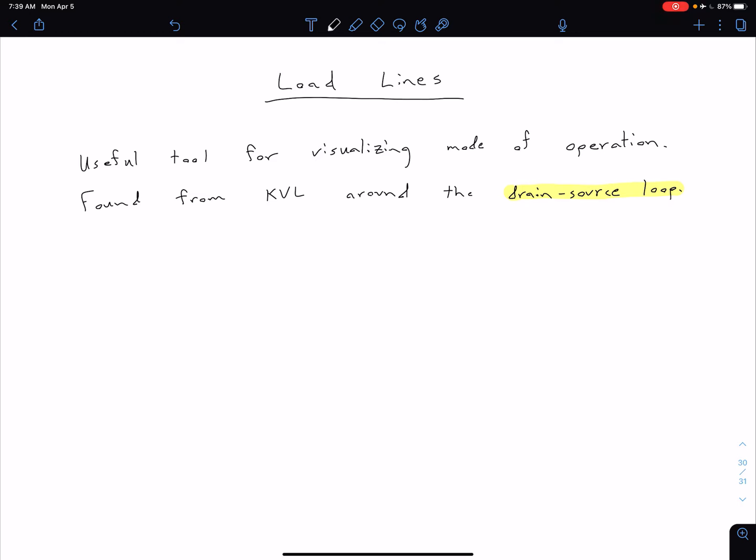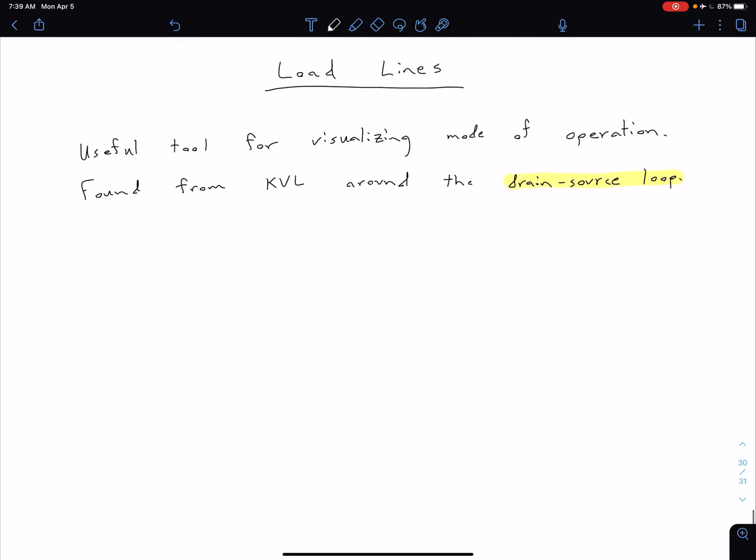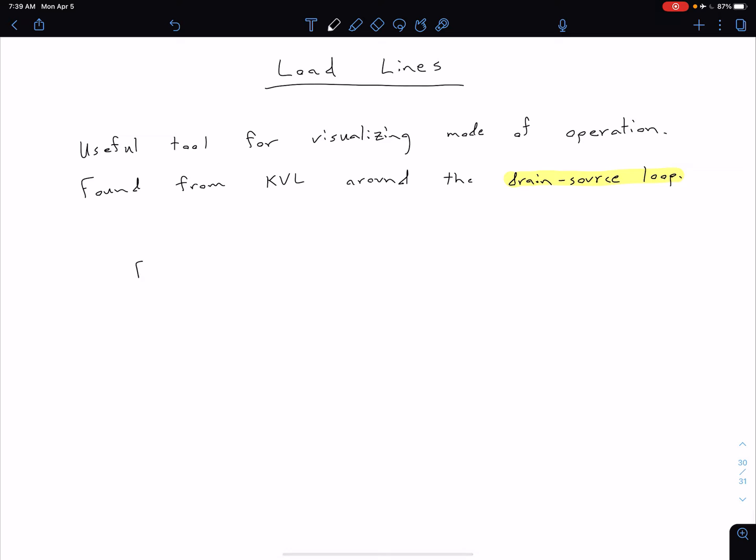Let's consider the circuit from the previous example. We had our drain resistance and nothing else in the circuit. From the previous example, what we had was VDD was just equal to ID×RD, so the voltage drop across that drain resistor, plus our VDS. We didn't have a source resistor or anything like that.